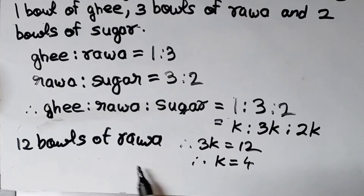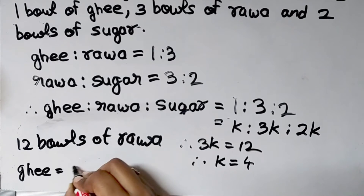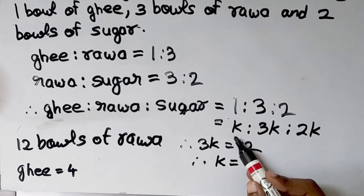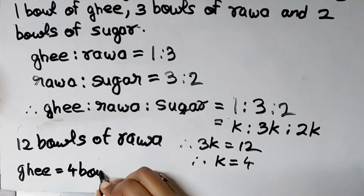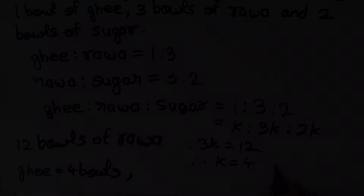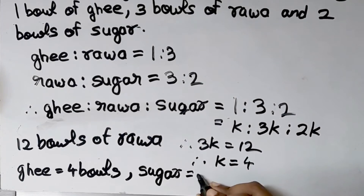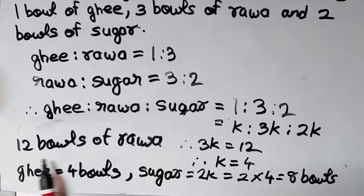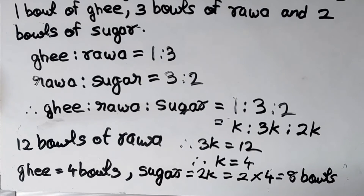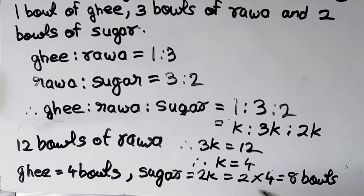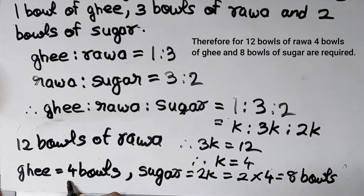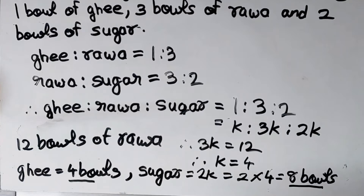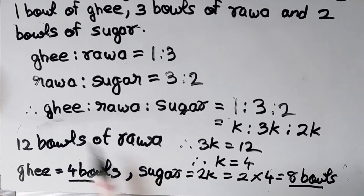Now we substitute k equals 4. Ghee is k bowls, that means 4 bowls. Sugar is 2k, which is 2 into 4, equal to 8 bowls. So the final answer: for 12 bowls of rava, we need 4 bowls of ghee and 8 bowls of sugar. This is how you can use the ratio of 3 numbers to solve such problems.